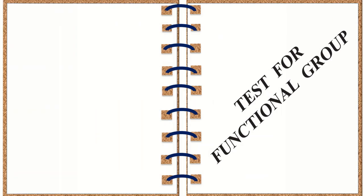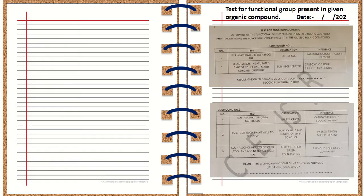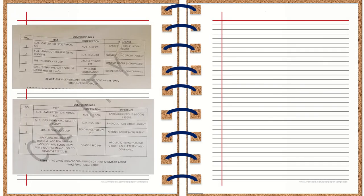Let's see the next section: the test for functional groups. This should be written with the result and the structure of each compound. A single page can accommodate two compounds — Compound 1 and Compound 2 on the right-hand side, and Compound 3 and 4 on the left-hand side. There is no strict left-and-right pattern here; you can write continuously, but it should be in tabular form.